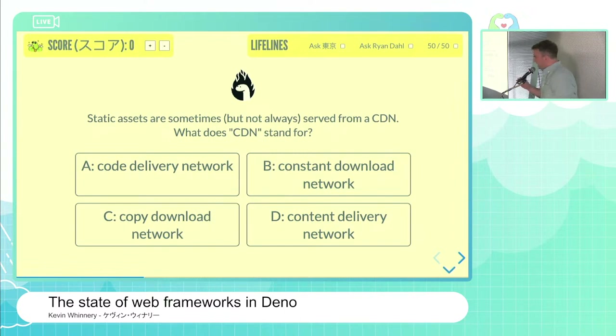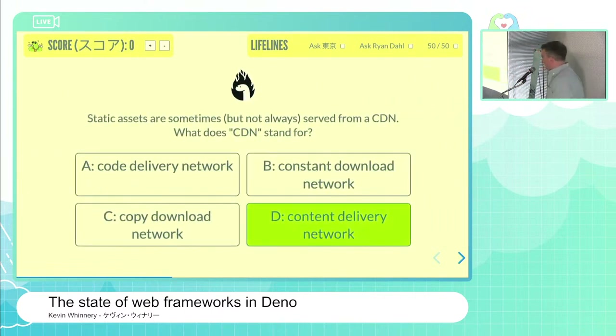The contestant answers D, content delivery network. Is that your final answer? Yes. That is correct — it's D, content delivery network. Very nicely done.